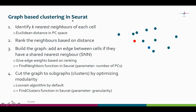The clustering in Seurat starts by identifying k nearest neighbors of each cell using Euclidean distance in principal component space. Let's imagine that these dots are our cells in the principal component space — meaning that if we chose 10 principal components, our space is 10-dimensional. We start identifying k nearest neighbors for all cells. If k is 3, these 3 cells would be the nearest neighbors for the red cell. In reality, the default k value is 30.